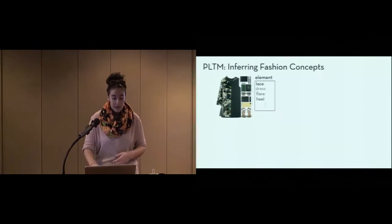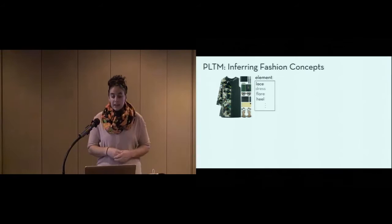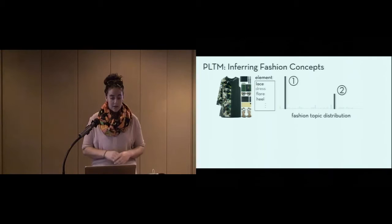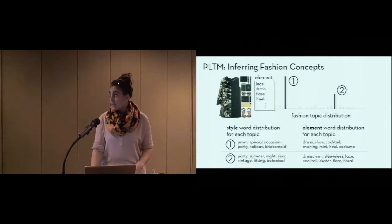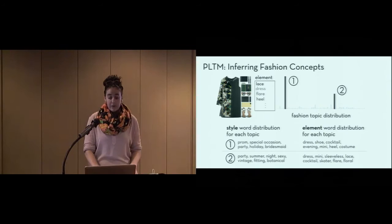Once the model is trained, we can then infer fashion concepts for a new outfit. Here, the outfit is represented in an element document and also in an illustration. First, we can infer a topic distribution over the latent fashion concepts in that outfit. In addition, for each topic, we know the style word distribution for that topic, and the element word distribution for the same topic. So here, we can see this outfit's fashion topic distribution is at the top, with two topics much more important for this outfit than the 30 or so others.